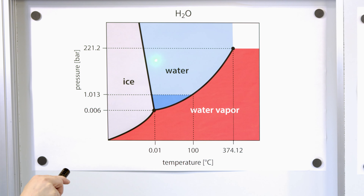If we increase the pressure, then we slide up this scale to higher and higher pressures, but we have to read it left to right. So you would still have a solid phase, then a liquid phase, then a gas phase even at higher pressures. But notice that the water phase is much, much bigger. Whereas down here at atmospheric pressure the water phase spans about 100 degrees Celsius, up here at higher pressure the water phase is much, much wider in terms of temperature.